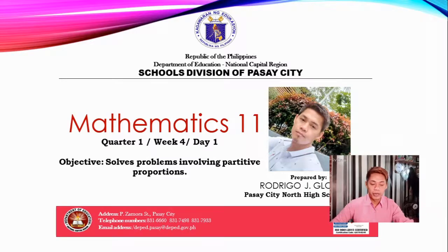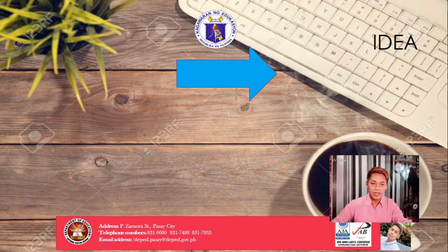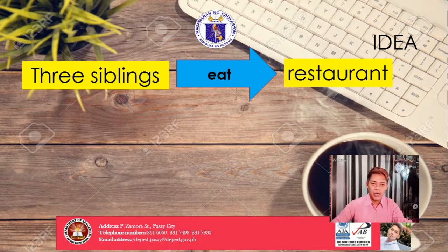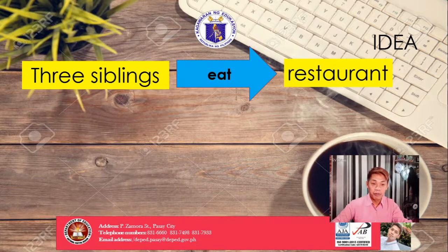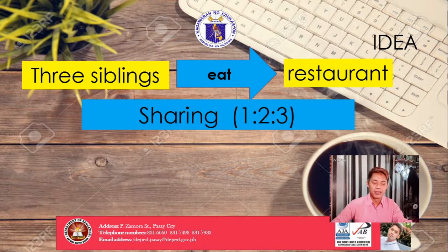Let's have first an idea of what is partitive proportion. We have three siblings who would like to eat in a restaurant. How do we come up with the idea of partitive proportion? The concept is sharing — 1, 2, 3 — that is the sharing of the three siblings. That is what we call the concept of partitive proportions.